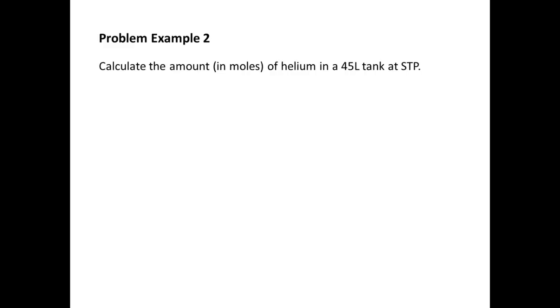So let's take a look at what this shortcut looks like. If you were to be given a problem like example 2 to calculate the amount in moles of helium in a 45 liter tank at STP, if you see STP, now you could solve this problem the exact way we did in the last example, or you could do this shortcut where we take our 22.4 liters per mole, and we're going to use it as a unit conversion. And it's a little bit easier to see if we write it as a fraction, 22.4 liters over 1 mole.